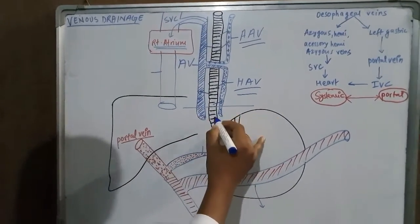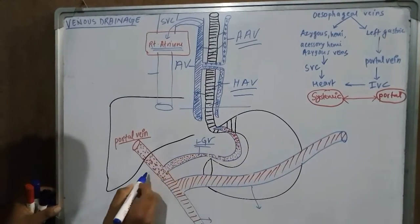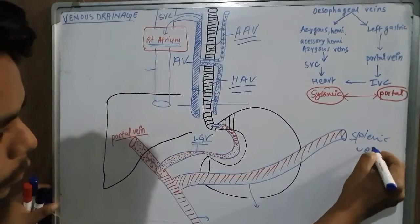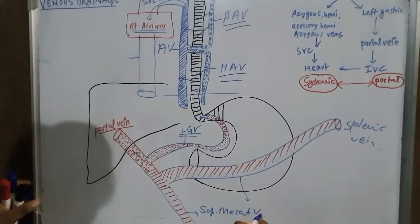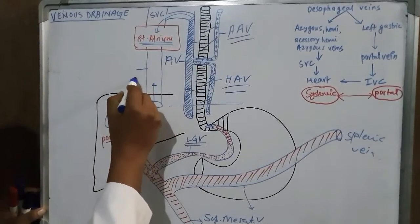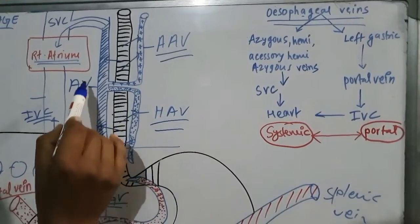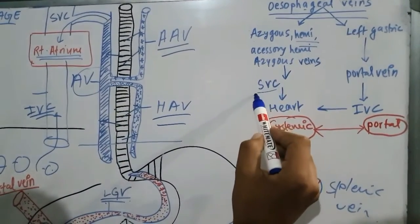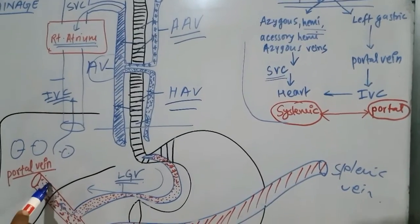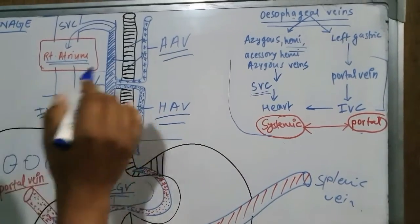In the lower part of the oesophagus, the left gastric vein drains blood into the portal vein, which receives drainage from the splenic vein, superior mesenteric vein, and left gastric vein. This portal vein goes to the portal sinusoids and then to the inferior vena cava. The azygous and hemiazygous veins represent the systemic drainage, while the left gastric vein and portal vein represent the portal system — forming a portosystemic anastomosis in the venous drainage of the oesophagus.